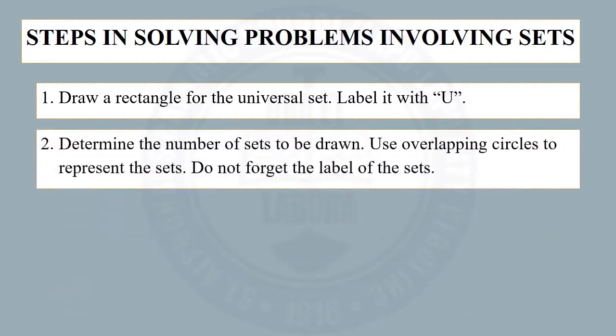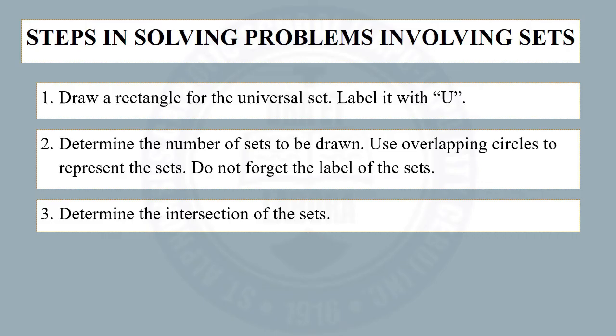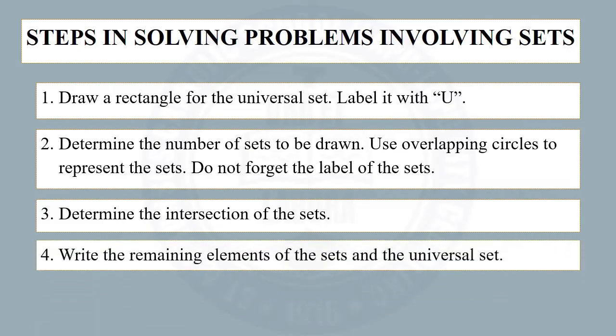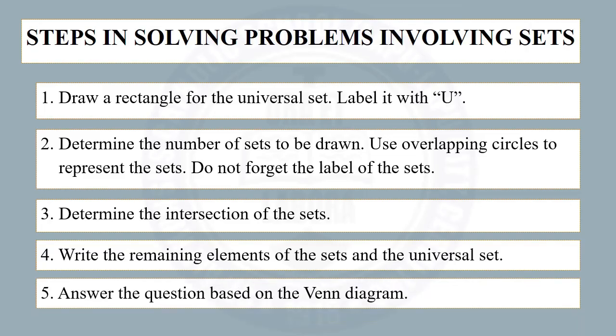Label it with capital letter U. Step 2: Determine the number of sets to be drawn. Use overlapping circles to represent the sets — do not forget the labels. Step 3: Determine the intersection of the sets. Step 4: Write the remaining elements of the sets and the universal set. And the last step: answer the question based on the Venn diagram.